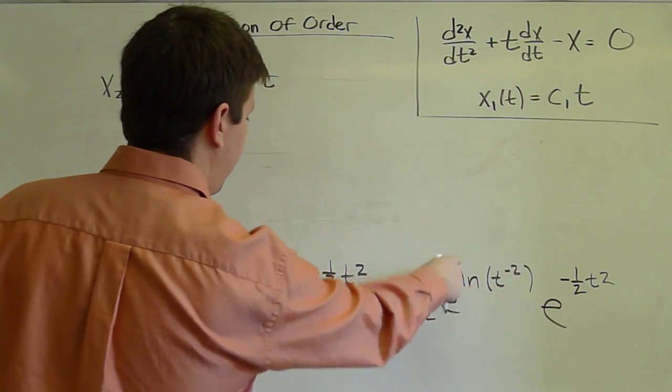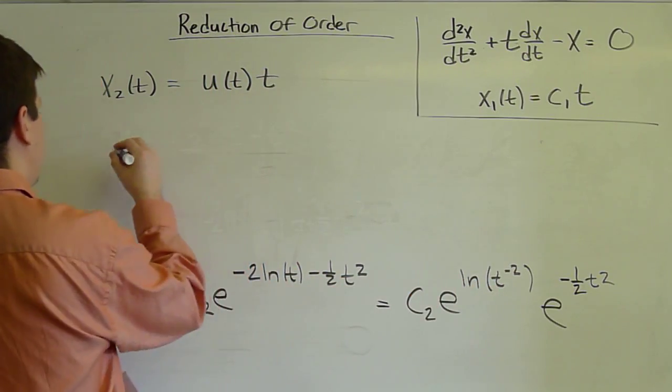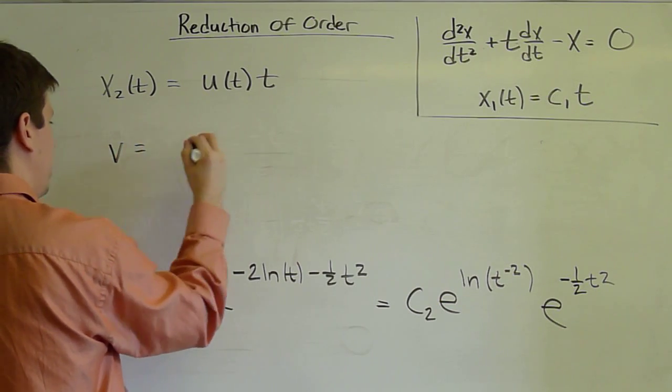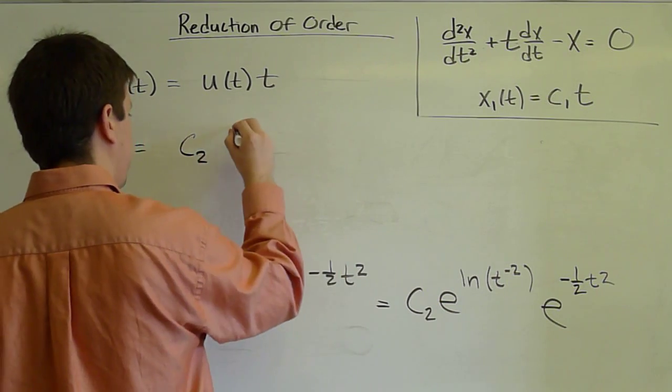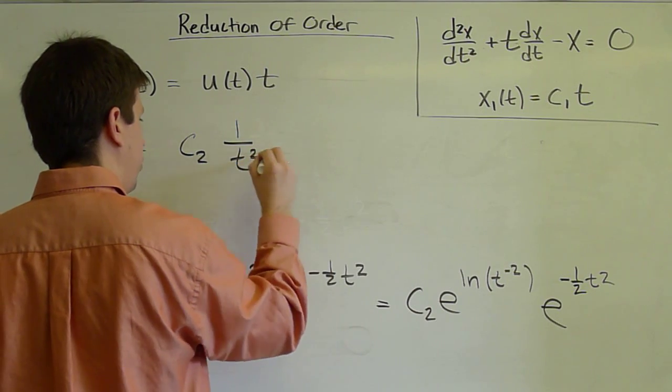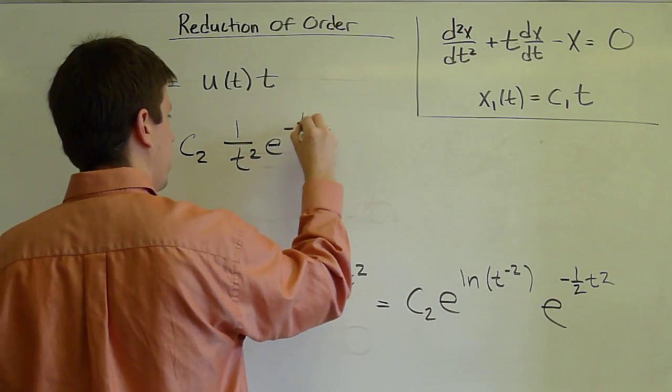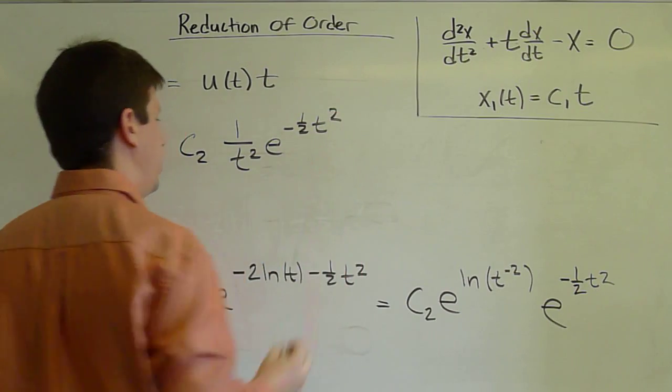Finally, e^(ln(t^(-2))) gives us v equals c2 times (1/t²) e^(-1/2 t²).